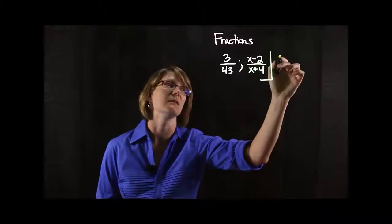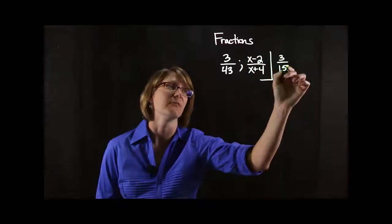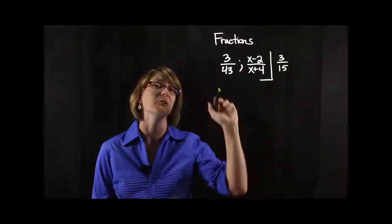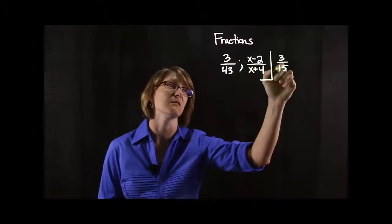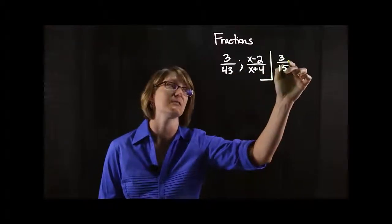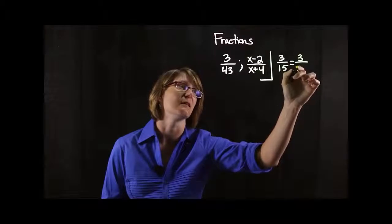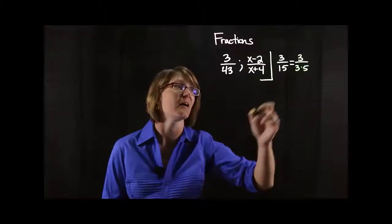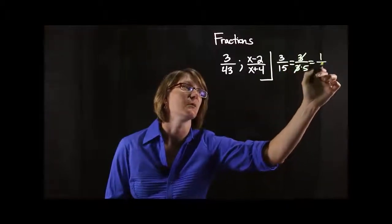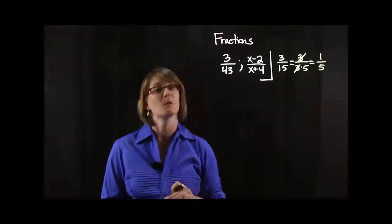So better examples then would be like 3 over 15. That one you can actually reduce because you can factor a 3 out of that denominator. So this would be like 3 over 3 times 5. Cancel those 3s so you'd end up with 1 fifth.